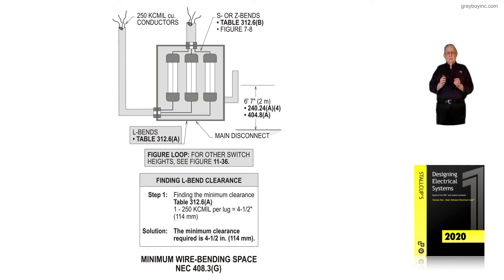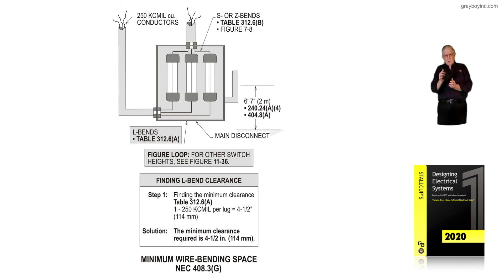Inspectors go to NEC 110.3A3 to see if the bending space is adequate. That section applies to all articles or sections of the code unless one of those articles or sections modifies it. So our figure 7-7, along with NEC 408.3G, deals with the minimum wire bending space — illustrated here when we're forming the conductors into an L-bend, as seen on the load side of that disconnect and those fuses.